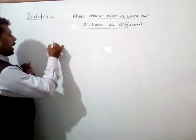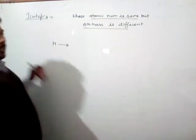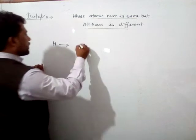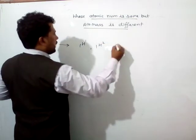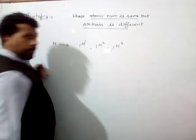So for an example, hydrogen has three isotopes: protium, deuterium, and tritium, written as 1H1, 1H2, and 1H3 for the same atom.